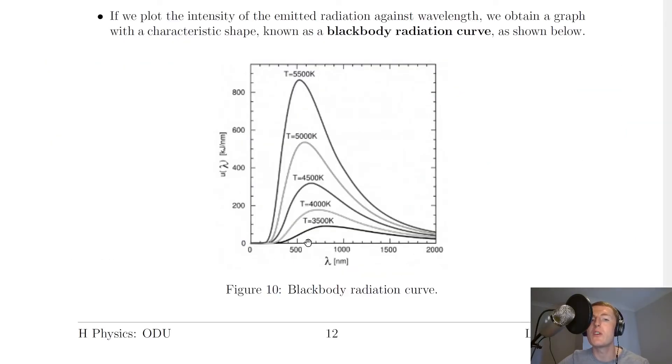So looking back at our graph in the notes now, you should be able to see this first curve is for 3500 Kelvin. Then we've got 4000 Kelvin, 4500, 5000 and 5500. So the higher the temperature, the more area under the graph and the taller the curve.